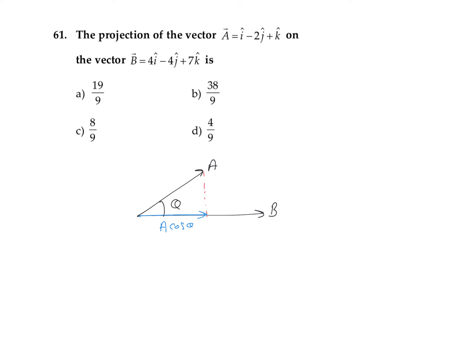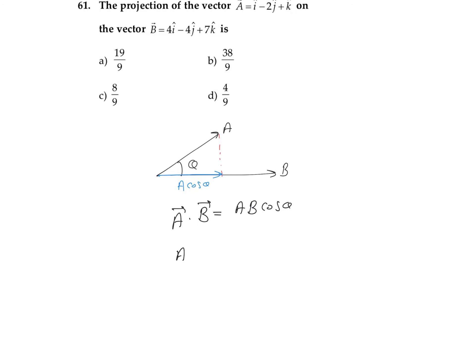We can find out the component of a along the direction of b, which is equal to a cos theta. Now let us see how to find out the value of a cos theta from the equation a dot b equals a b cos theta. We need to find out the value of a cos theta, which can be written as a vector dot b vector divided by b.